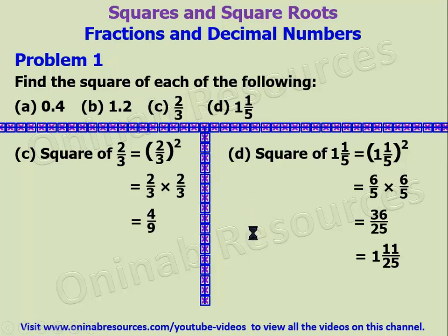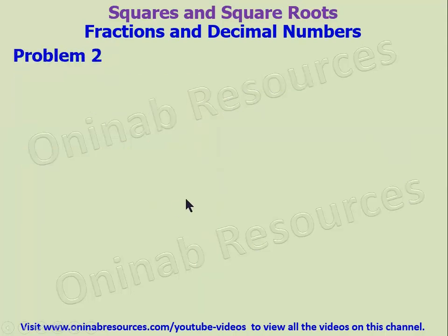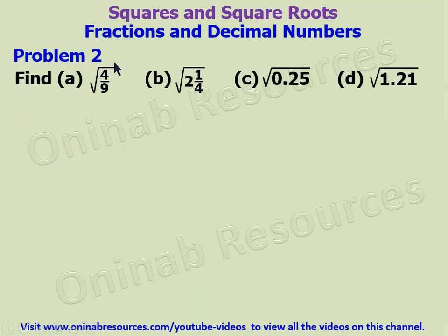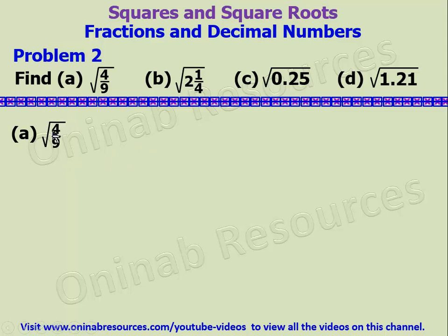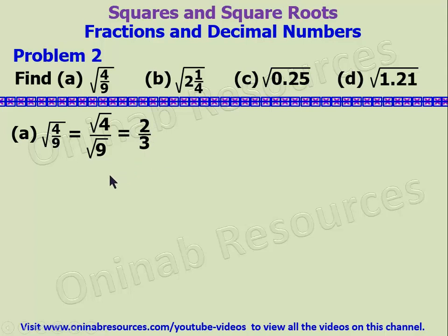We go to problem 2. In problem 2 we have to find: A, the square root of 4 over 9; B, the square root of 2 whole number 1 over 4; C, the square root of 0.25; and D, the square root of 1.21. Starting from A: the square root of 4 over 9 means the square root of 4 over the square root of 9. The square root of 4 is 2, and the square root of 9 is 3. So our answer is 2 over 3.